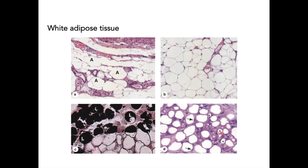This is adipose tissue from a young mammal. The asterisks indicate adipocytes or fat cells that are still undergoing differentiation — they still have multiple fat globules around and are not yet unilocular. One cell shown is already unilocular with the nucleus visible to the side. These are pre-adipocytes still undergoing differentiation.